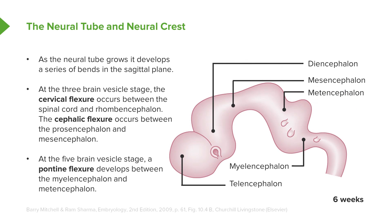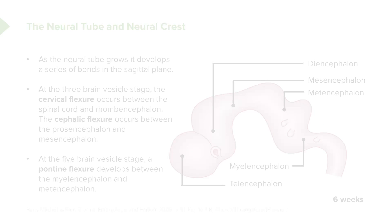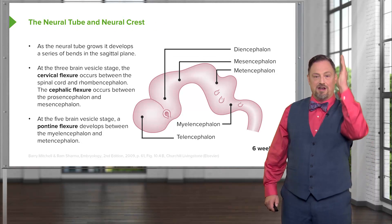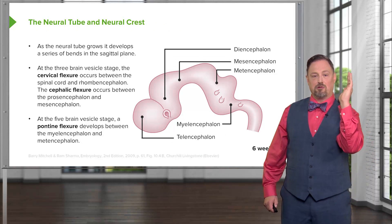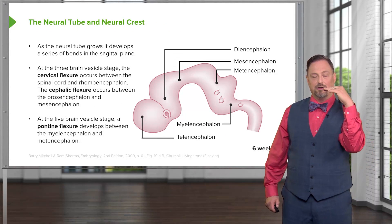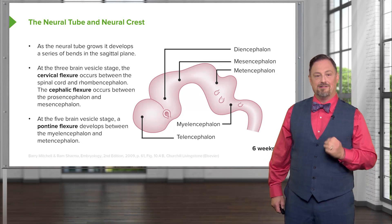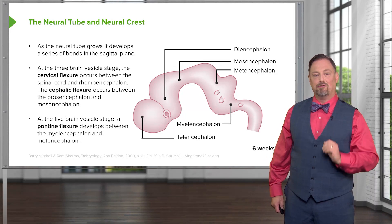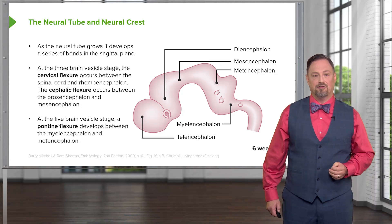Further in development we get another flexure — the pontine flexure — occurring between the myelencephalon and the metencephalon. This is one reason our brains don't go straight up and down from the spinal cord, but have a tilt when viewed from a lateral or sagittal perspective.